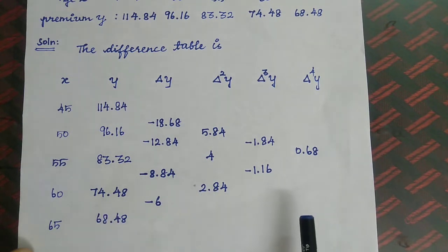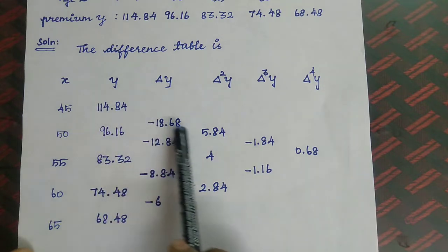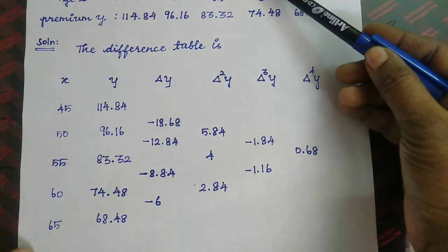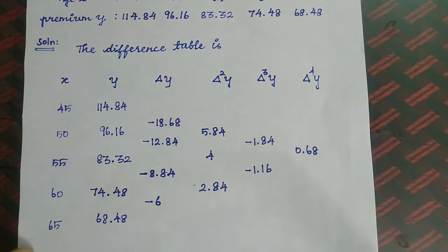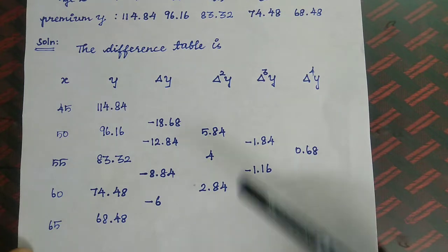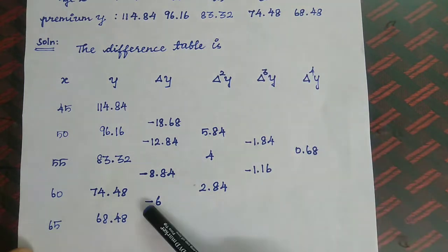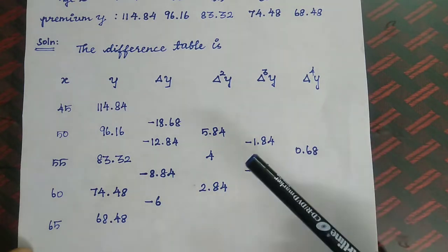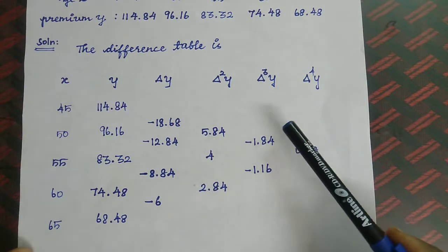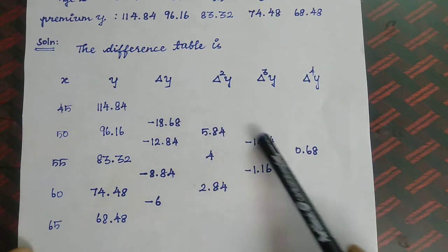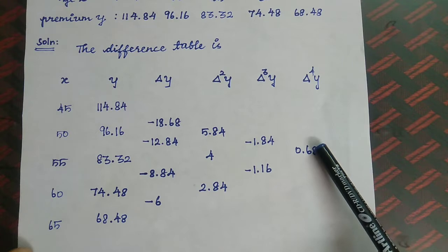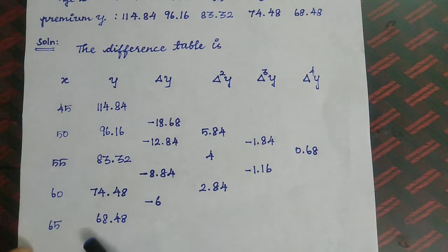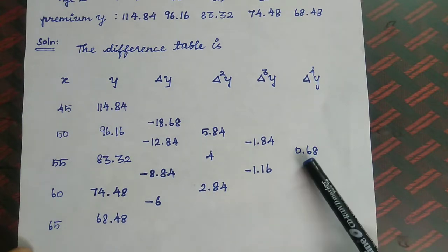When using the forward interpolation formula, we use all the beginning values of the difference table. When going for age 63 we use the backward interpolation formula, and in that case we use the last values of the table. For both forward and backward, we can use the same difference table — just taking beginning values for forward and last values for backward.